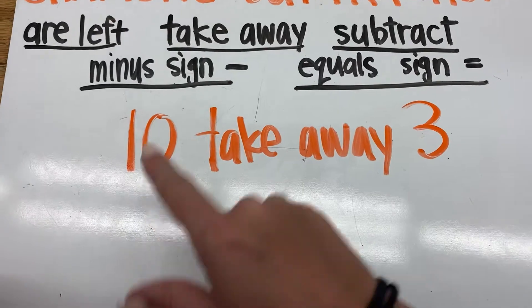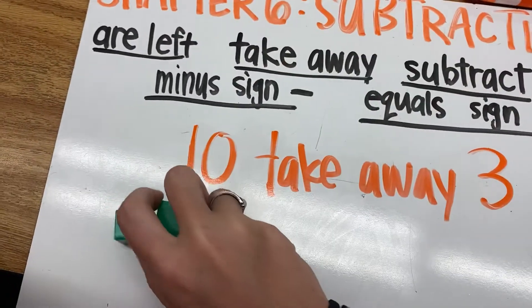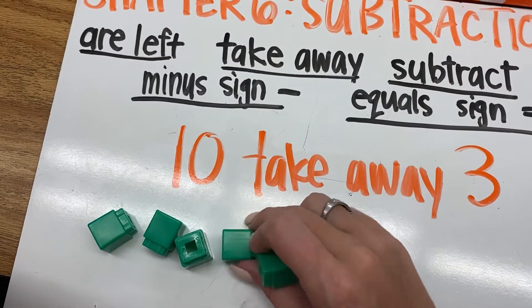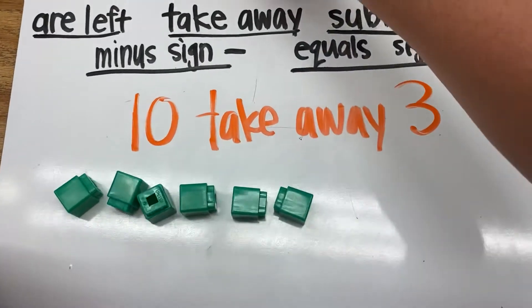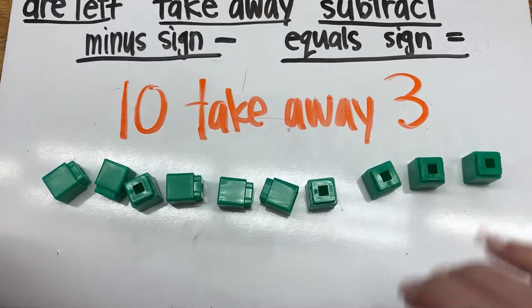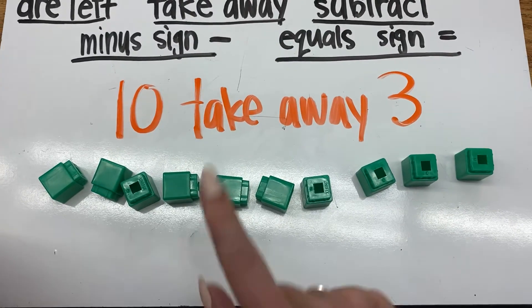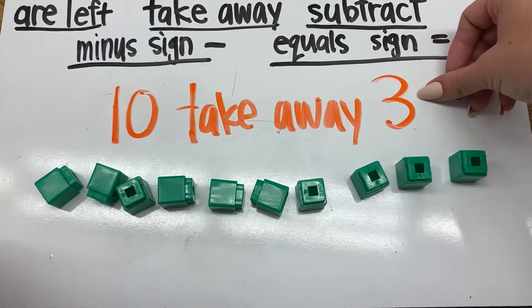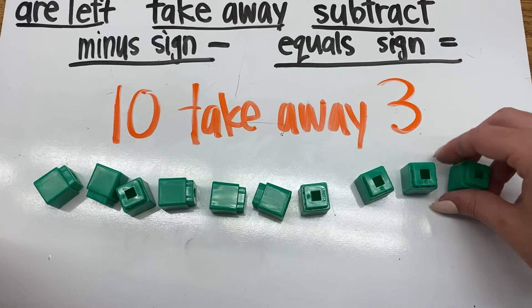I'm going to put out ten cubes, right? One, two, three, four, five, six, seven, eight, nine, ten. I have my ten cubes out. How many am I going to take away? I'm going to take away three. So I'm going to take one, two, three.